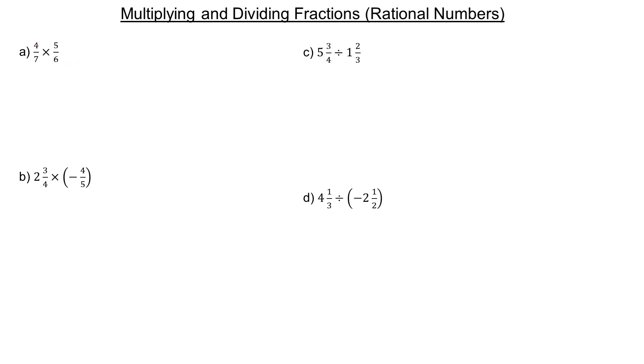To multiply, remember the 4 and 5 are called the numerators, the 7 and 6 are the denominators. All we do is multiply the two numerators together. So 4 times 5 is 20, and 7 times 6 is 42 in the denominator.